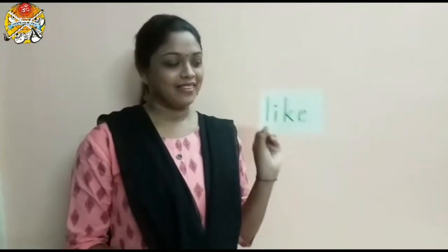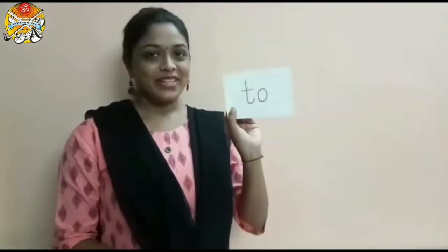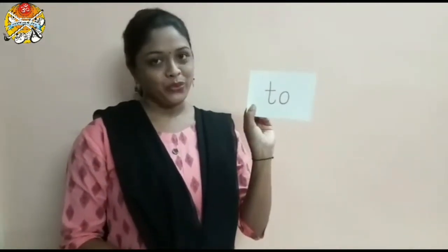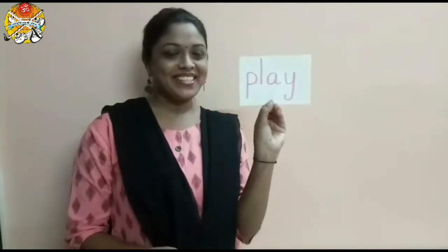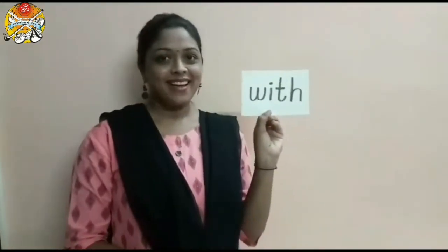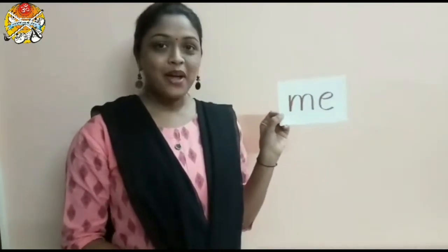And this word is: like. This word is: to. And Raj and Annie like to play. Which word is this? Play. And this word is: with. Children, which is this word? Me.